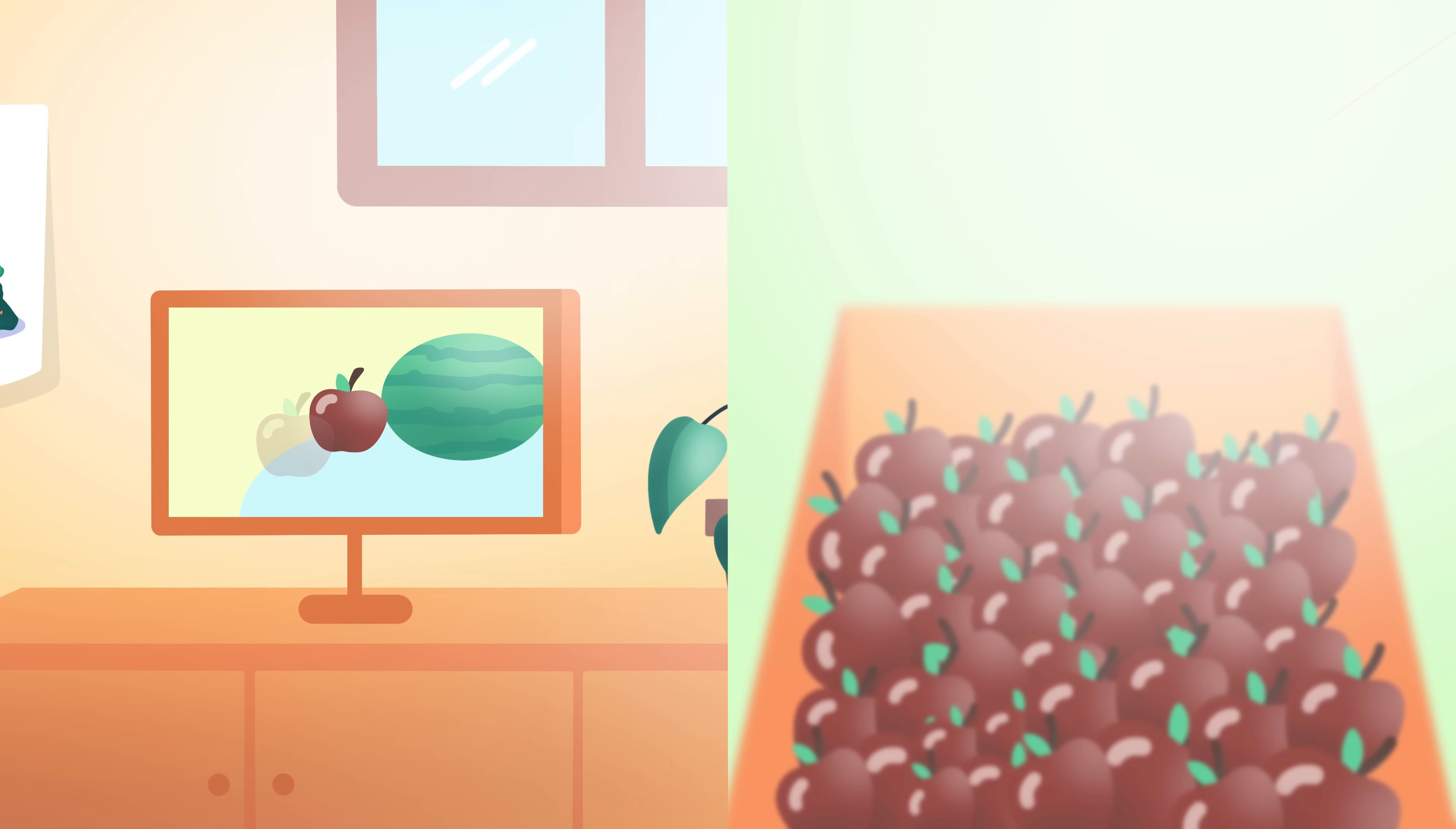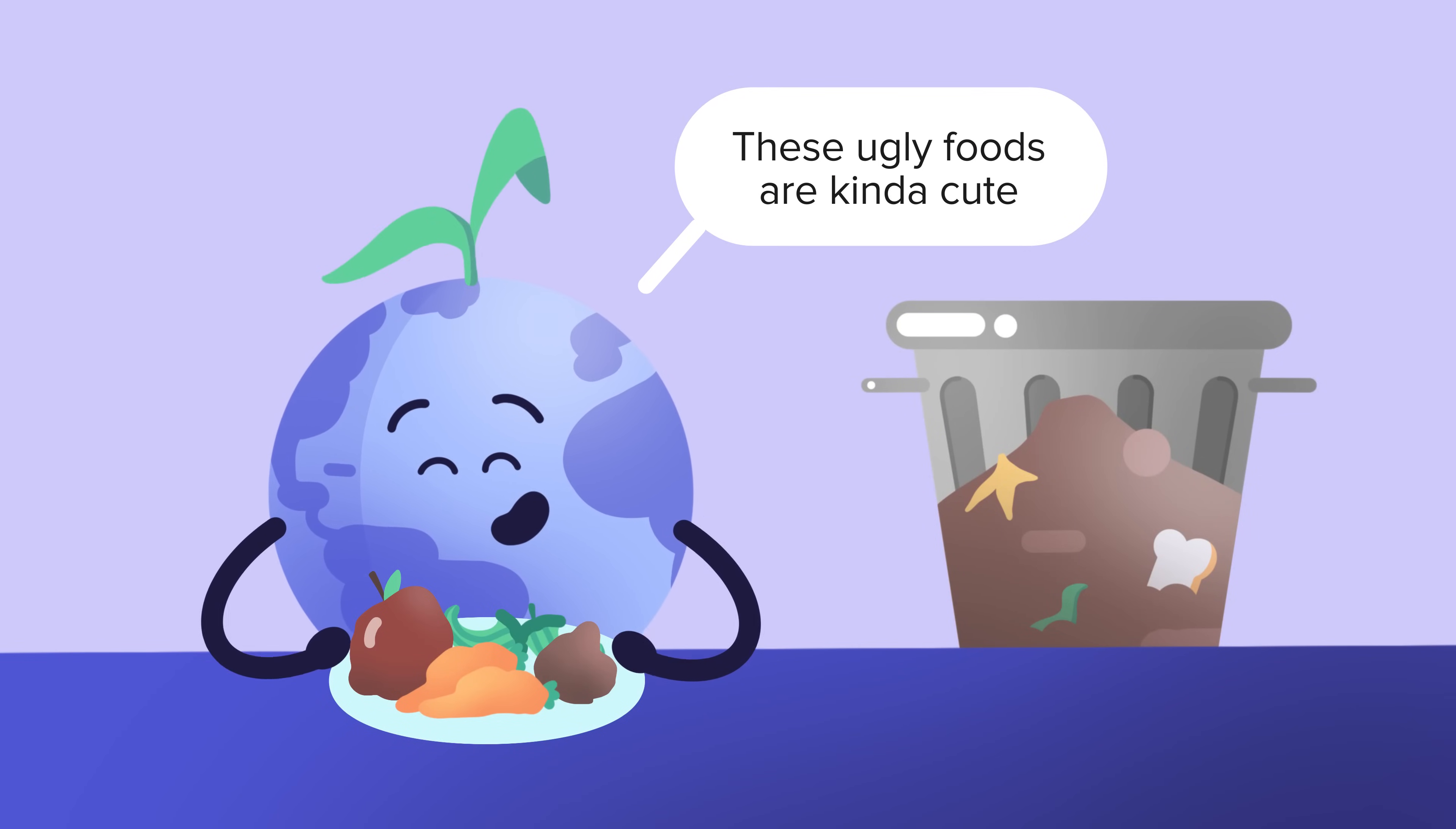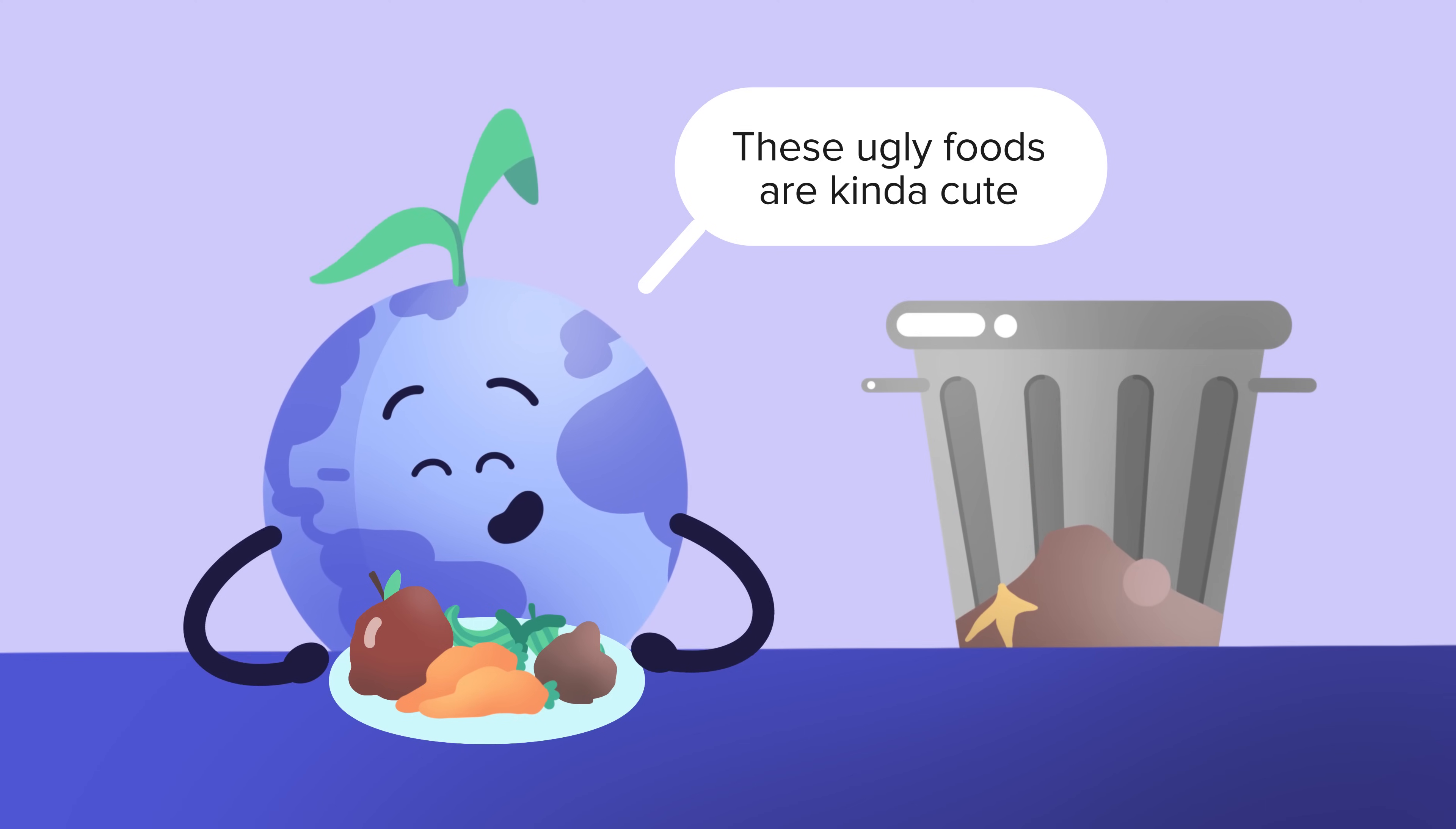For example, supermarkets set very high standards for what food should look like, meaning that imperfect food is often discarded, even if it's perfectly edible. Embracing these ugly foods at both the retail and consumer level will significantly reduce how much gets thrown away.